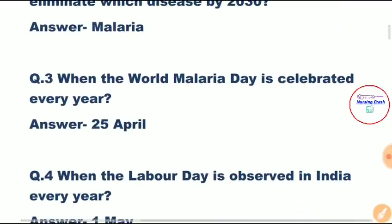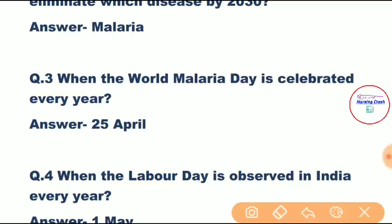Question number three: When is World Malaria Day celebrated every year? Correct answer is 25th April. Every year on 25th April, World Malaria Day is celebrated internationally. It is one of the eight official global public health campaigns currently marked by the World Health Organization.